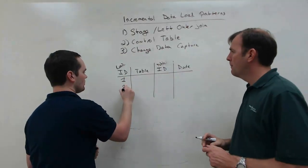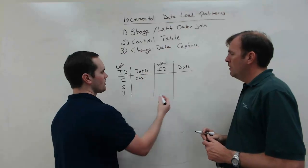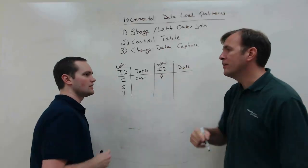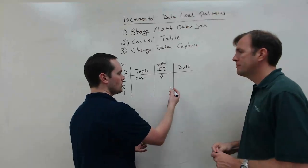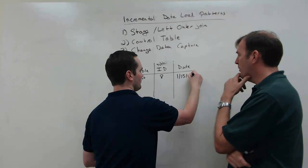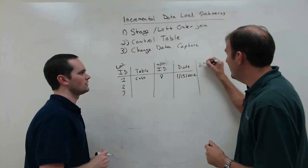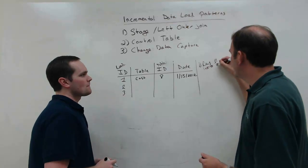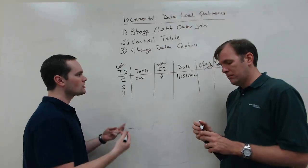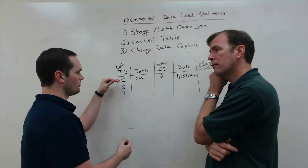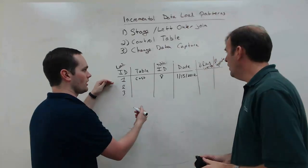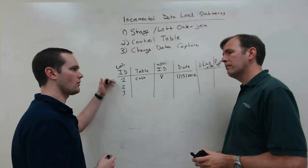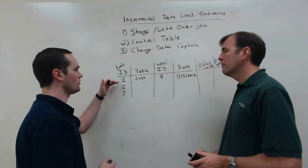So what we end up with is our customer table, and the table ID may be the identity column from inside there. So we load all the data up to customer number 8 — this would be the primary key from the source system. The other option is to use a date instead, so we might record that we loaded this data on 1-15-2012. We also need to put the number of rows inserted, so you have a little bit of an audit row — inserts and maybe number of updates. There are two ways to do this: you can have one record per table and continually update it, or rather than updating the existing record, just add a new one each time you load.